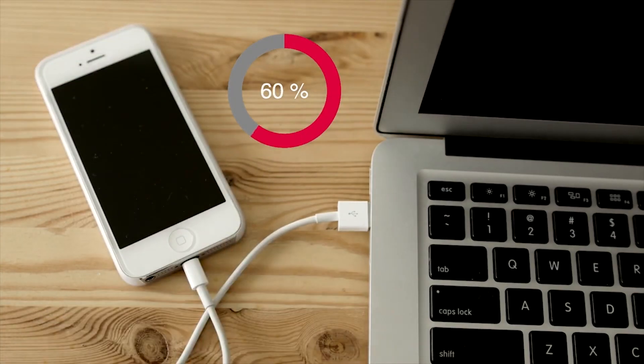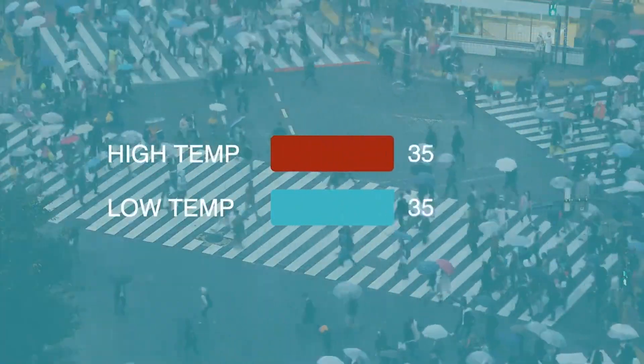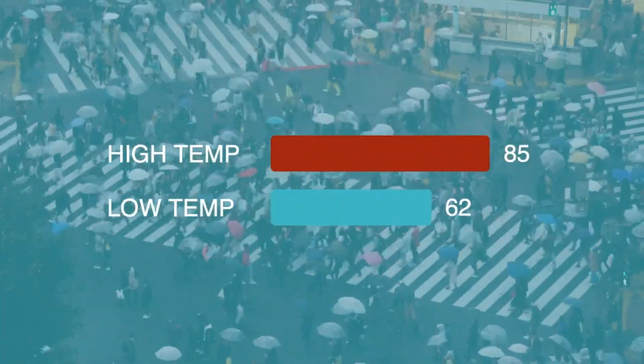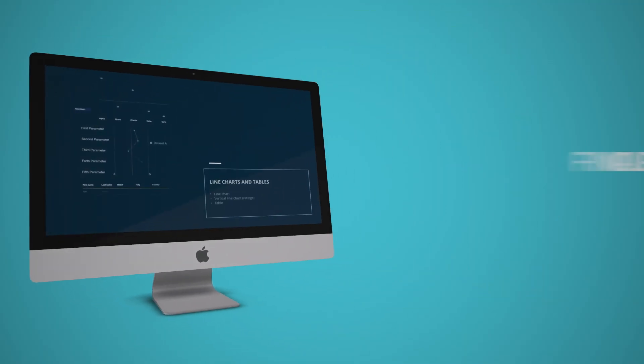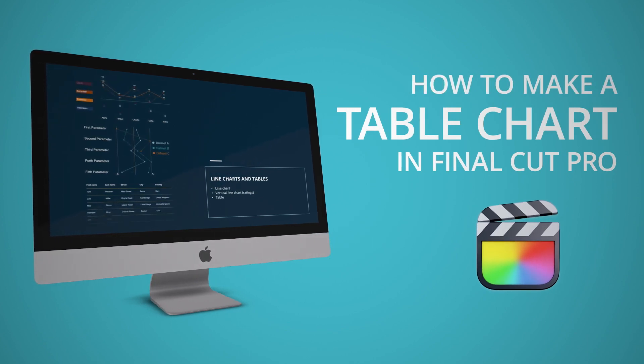No need to deal with sliders and on-screen controls, just enter or import the data as is. Let's take a look at how to make a professional table chart in Final Cut Pro.